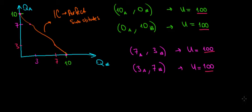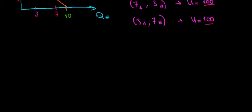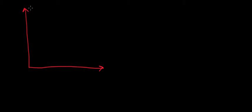Now let's go through another example, which is also a special case of a different indifference curve. This time we're not going to work with apples and bananas — we'll use shoes as an example to make more sense. Let's say we want to wear shoes and we know we want one on the left and one on the right. So we'll put left shoes on one axis and right shoes on the other.